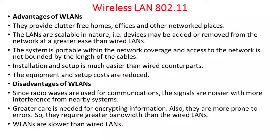Advantages of wireless LAN: It provides connectivity for home, office, and other network environments. LANs are scalable — devices can be added or removed more easily than in wired networks. The system is portable within network coverage and access is not bounded by cable length. Installation and setup is much easier than wired components, and equipment and setup costs are reduced. Disadvantages of wireless LAN: Since radio waves are used, signals are noisier with more interference from nearby systems. Greater care is needed for encrypting information and there are more errors, requiring greater bandwidth than wired LAN. Wireless LANs are much slower than wired LAN networks.